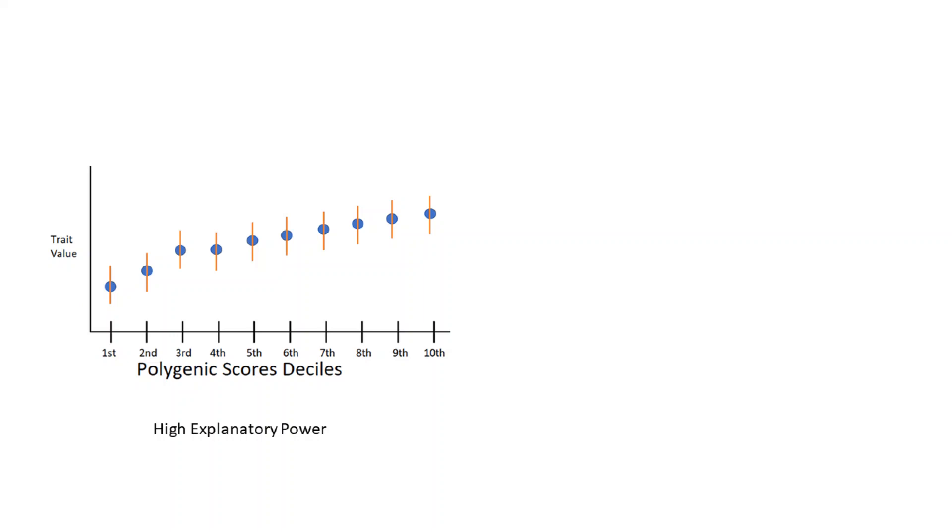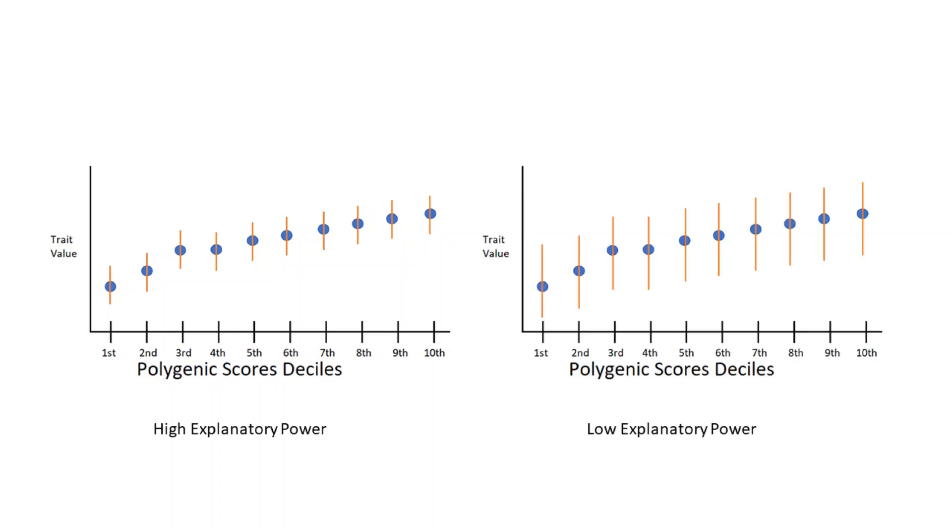Confidence intervals for a polygenic score with high explanatory power might look like this, whereas for a polygenic score with low explanatory power, confidence intervals may look like this. Note that the predicted value of the trait for each percentile is the same for both polygenic scores, however, the one with the smaller confidence intervals is more useful as we can have more confidence in the predicted mean value of the trait.